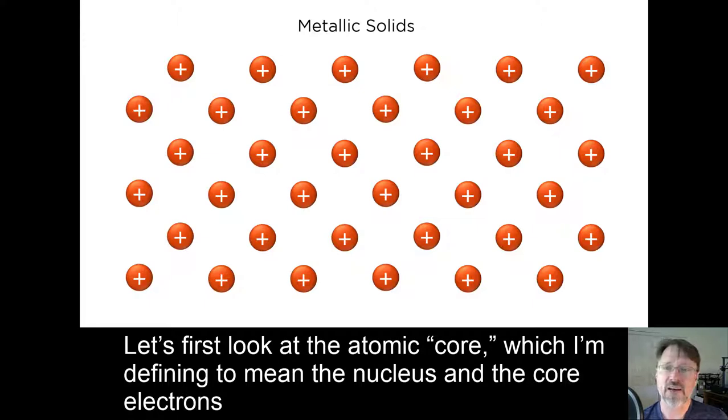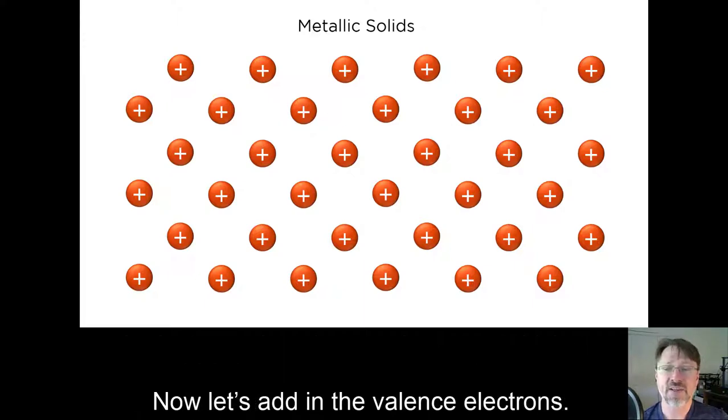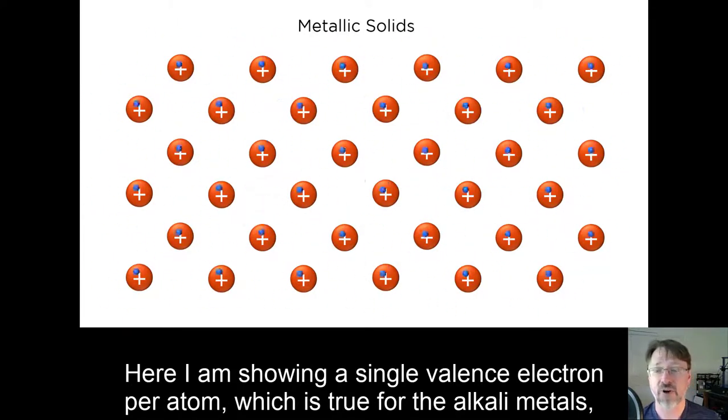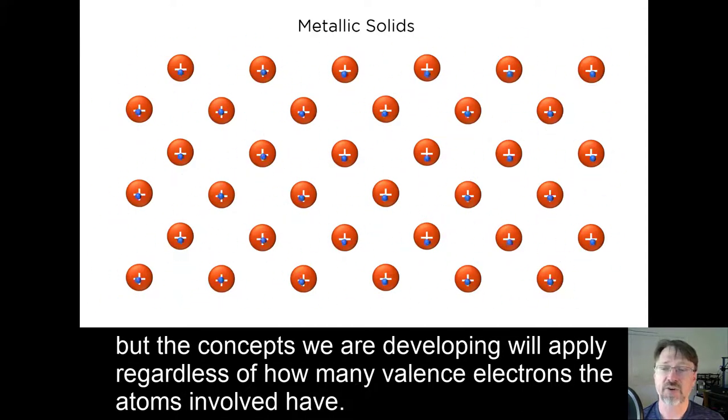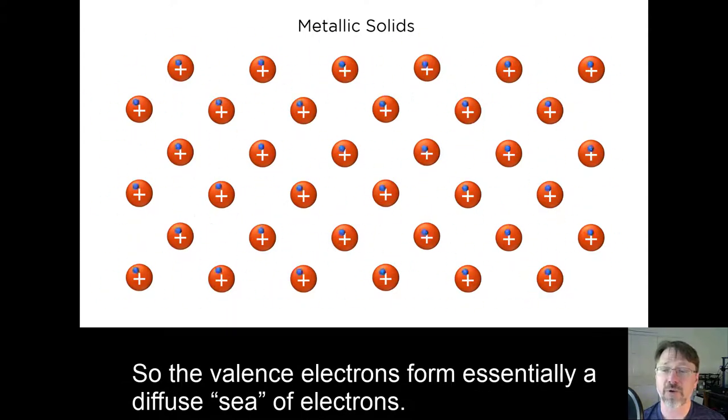Let's first look at the atomic core, which I'm defining to mean the nucleus and the core electrons—all electrons other than the valence electrons. Now let's add in the valence electrons. Here I am showing a single valence electron per atom, which is true for the alkali metals, but the concepts we are developing will apply regardless of how many valence electrons the atoms involved have. None of these electrons are being held particularly tightly by any of the atomic cores, so the valence electrons form, essentially, a diffuse sea of electrons.